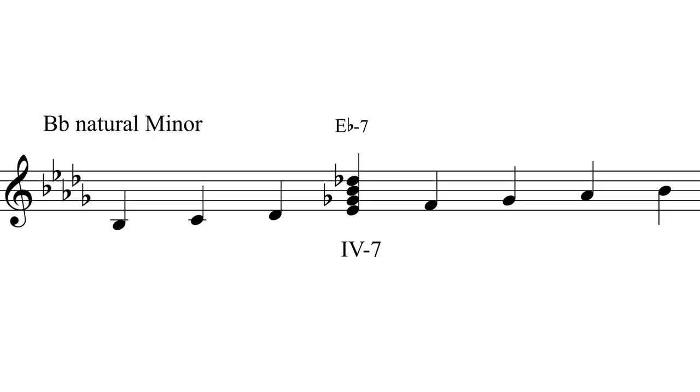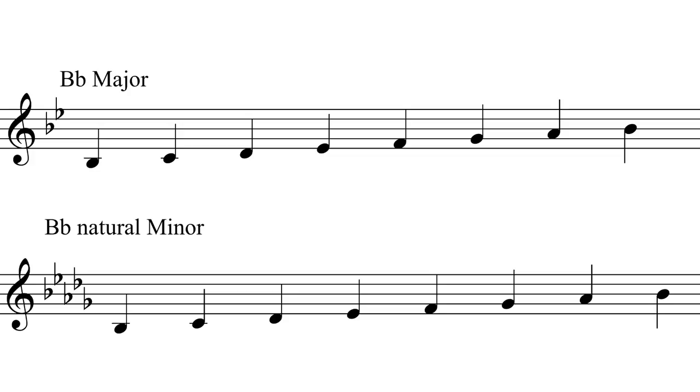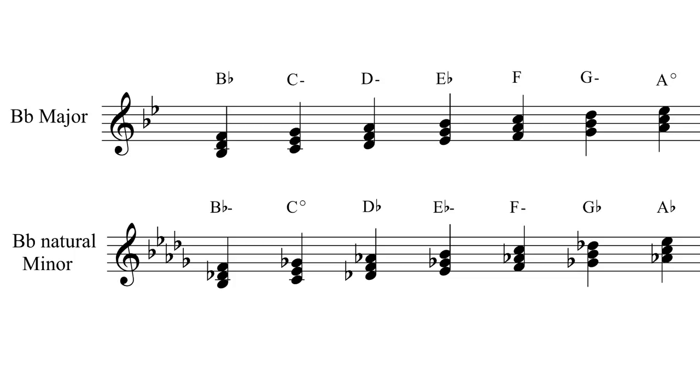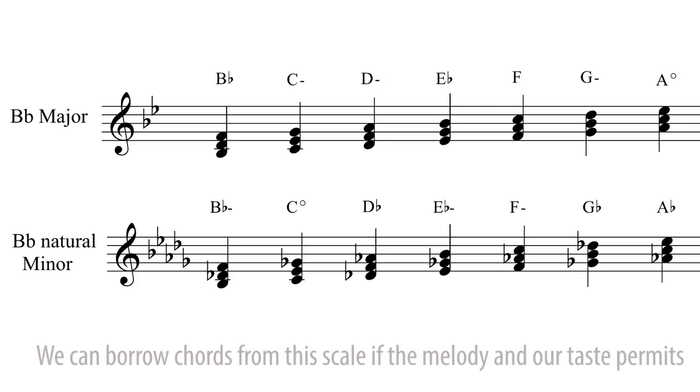Here are these two scales side by side, B flat major and B flat natural minor with the diatonic chords of each scale written in. You can see that the parallel tonality in this case B flat natural minor yields quite different chords from B flat major. So we can borrow chords from this scale if the melody and our taste permits.